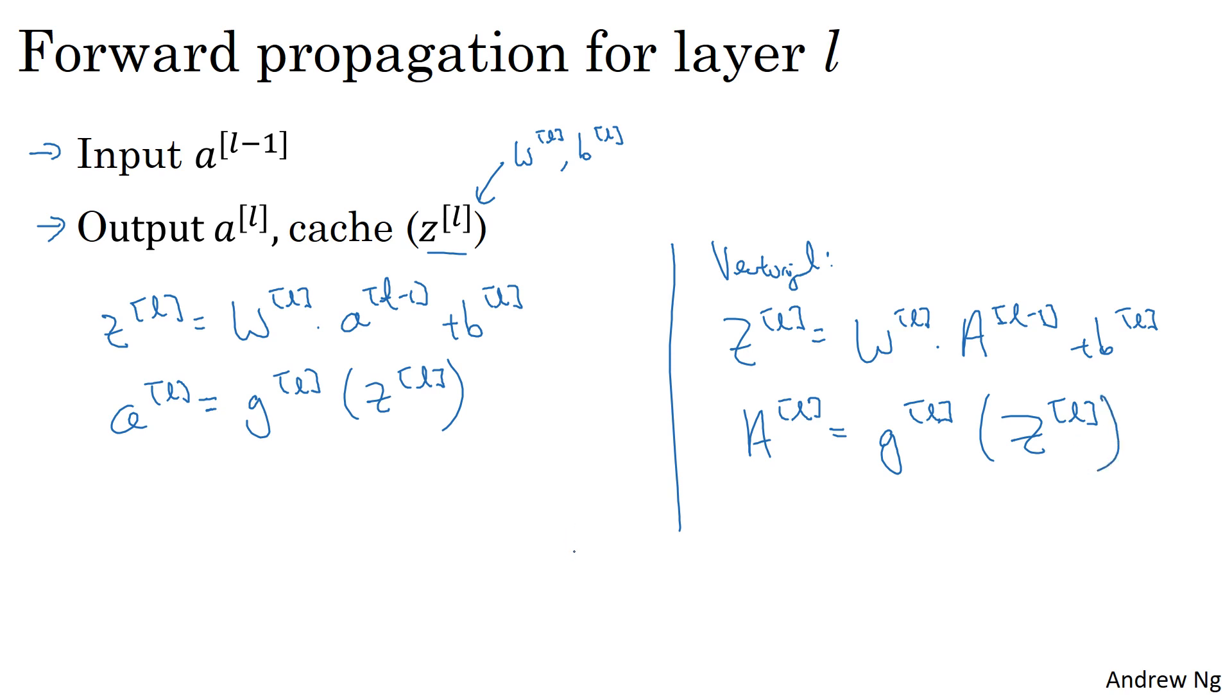On the diagram for the forward step, we have this chain of boxes going forward. You initialize that with feeding in a^(0), which is equal to x. So you initialize the input to the first layer with a^(0), which is the input features for one training example, or capital A^(0), the entire training set if you're processing the entire training set. That's the input to the first forward function in the chain. Repeating this allows you to compute forward propagation from left to right.